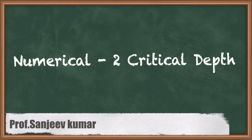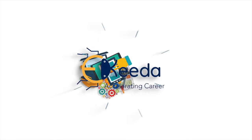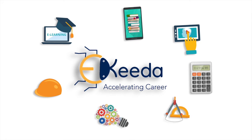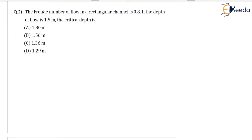Hello friends, in this video we are going to see a numerical problem on critical depth. As you can see in the given question, the Froude number of flow in a rectangular channel is 0.8. If the depth of flow is 1.5 meter, find the critical depth. That's the question.